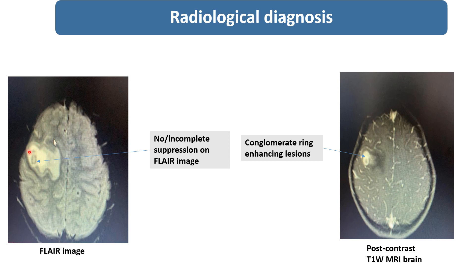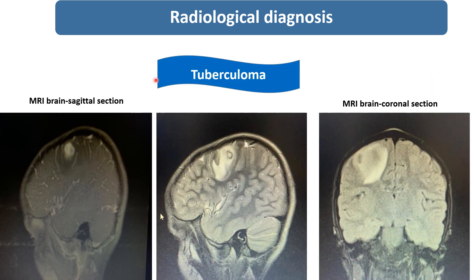This is the FLAIR image, and in this image you can see there is incomplete or no separation of the ring-enhancing lesion. And this is the post-contrast T1 image in which you can see conglomerated ring-enhancing lesions. These are the sagittal and coronal sections in which ring lesions with perilesional edema are also present.